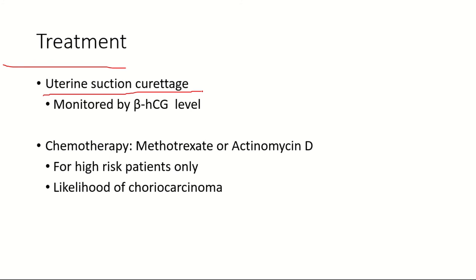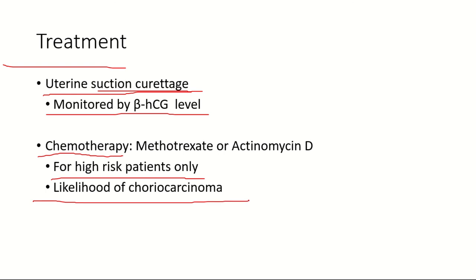Molar pregnancies are usually treated by uterine suction curettage, where a curette is inserted into the uterus to scrape and suction out the abnormal molar tissues. This procedure is monitored by measuring beta-hCG levels — the level must go down to zero after removal; if not, residual molar tissue is suspected. Chemotherapy with methotrexate or actinomycin D is reserved for high-risk patients with likelihood of progression to choriocarcinoma.